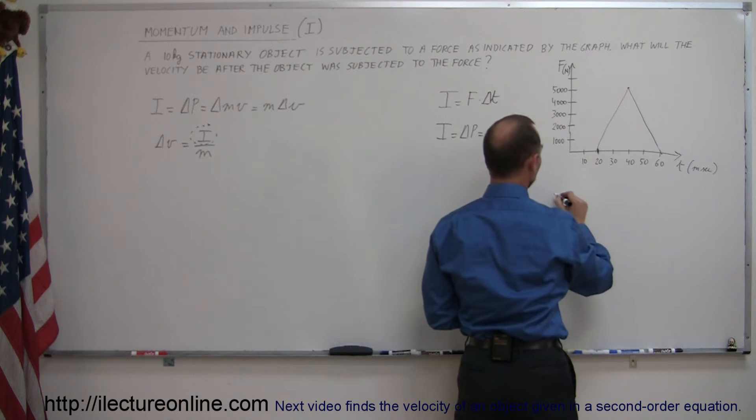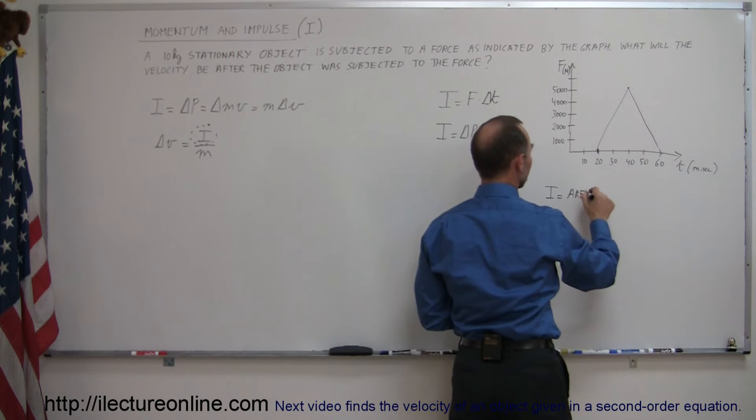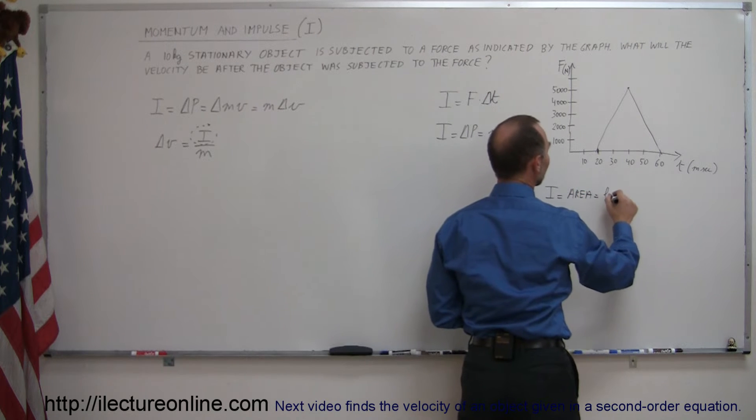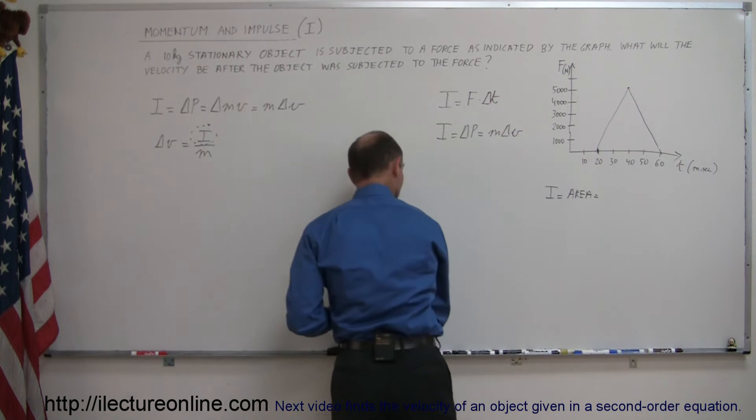Since this is a triangle I can say that the impulse is equal to the area which is equal to one half the base times the height because that's the area of a triangle.